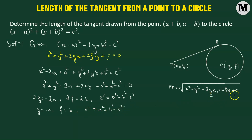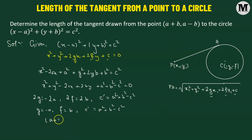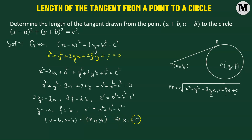Now we have the values of g, f, and c. We also need x1 and y1, which correspond to the given point a plus b comma a minus b. So x1 equals a plus b and y1 equals a minus b.